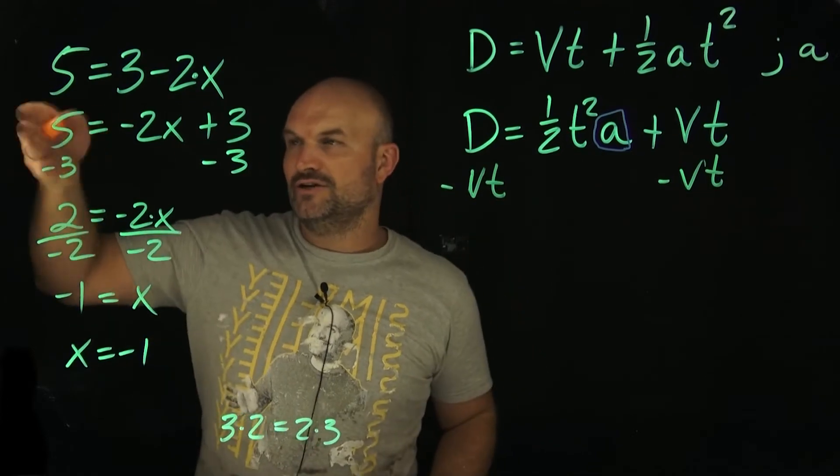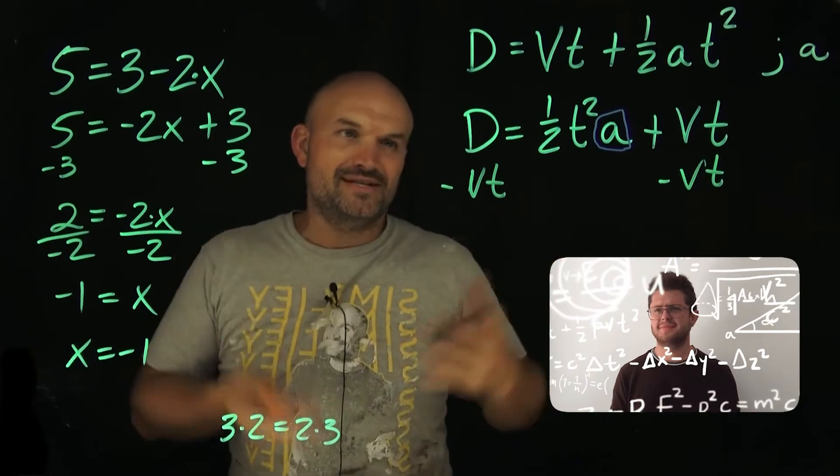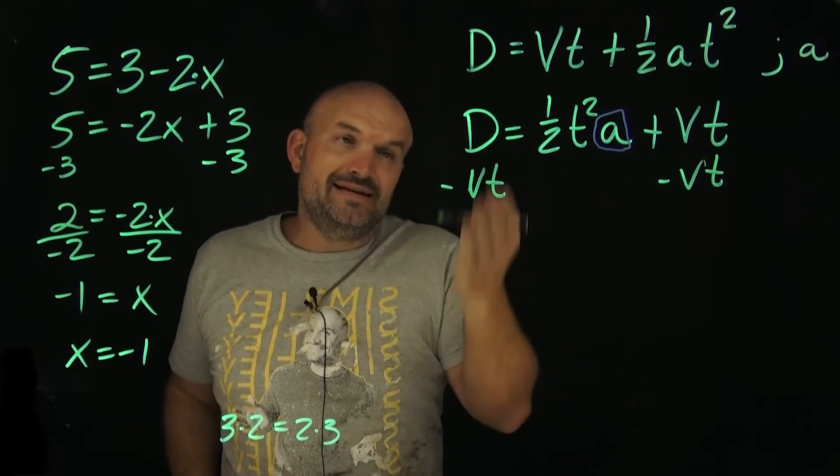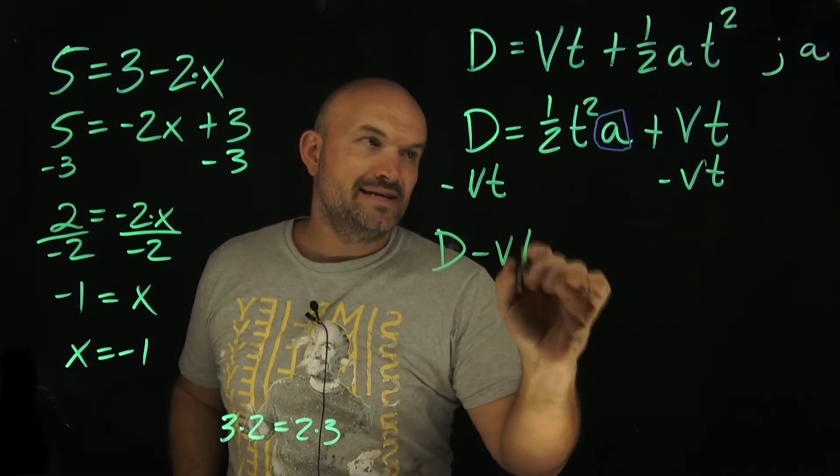Now, over here, I can do 5 minus 3. That gave me 2. We like that, right? It gave us a number. And now you're like, oh, why do we have all these variables in math? We can't do that. We don't know the value of d. We don't know the value of v and t. So therefore, I'm just going to be left with a d minus a vt.